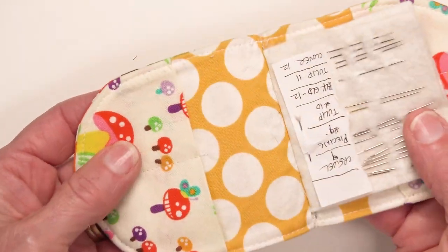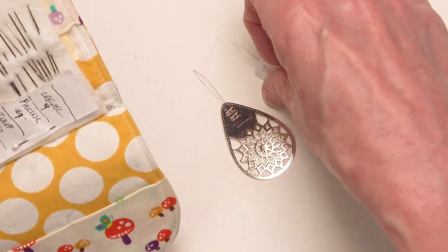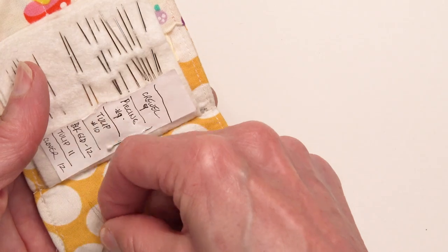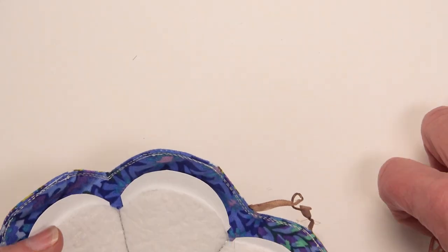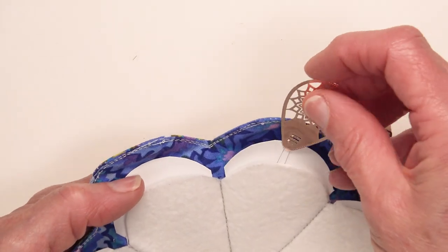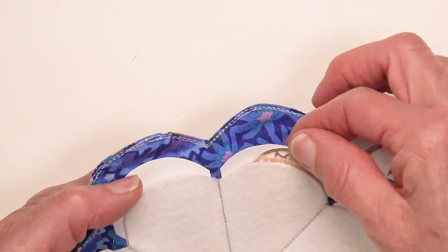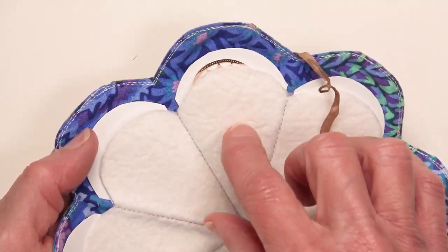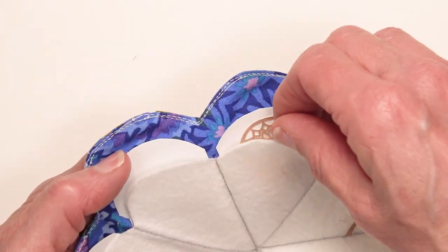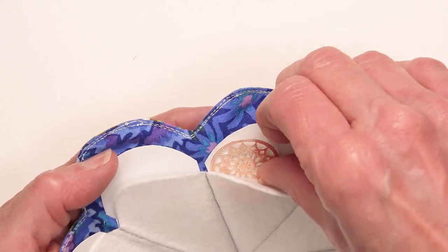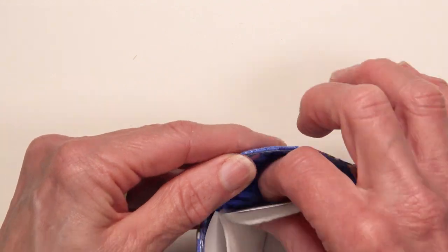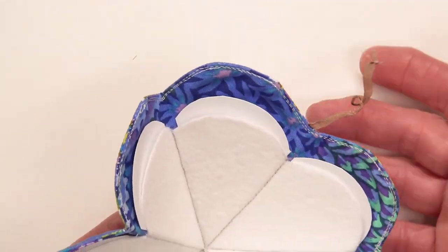This needle caddy has pockets. Perfect for storing threaders. The other place that you can store these, and I think this threader will be particularly happy, behind the felt in the vintage flower needle caddy. You could just pick one and tuck that baby right behind there.